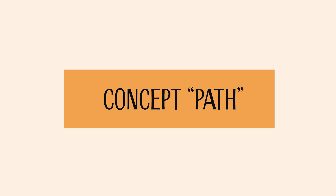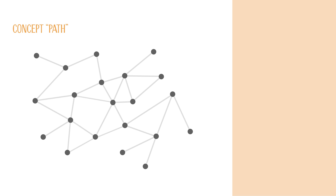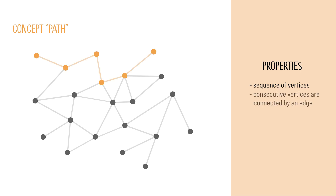One of the fundamental concepts in graph theory is the concept of a path. A path is a sequence of vertices in which consecutive vertices are connected by an edge. We define that paths must not contain repeated vertices. This means that the shown example is not a path because a vertex is visited twice.